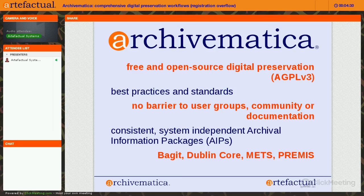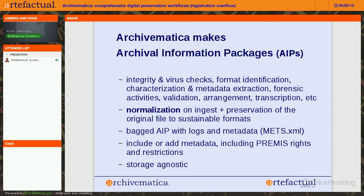The main benefit of using Archivematica is that you're getting consistent system-independent archival information packages, or AIPs. These archival information packages are stored, but the great thing is that you do not need Archivematica to read them — you can read them using any file browser. Archivematica uses the Library of Congress BagIt specification to package the AIPs. We also have a Dublin Core template that allows you to add simple Dublin Core metadata, and METS XML that contains PREMIS preservation metadata in our AIPs.